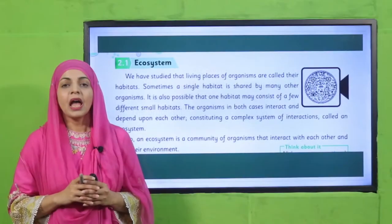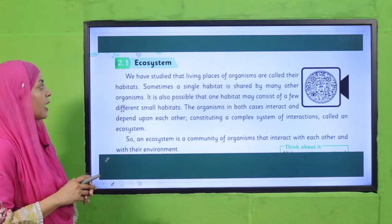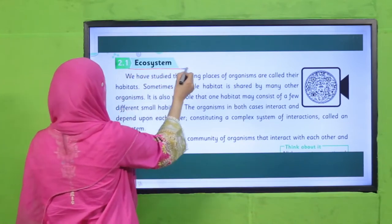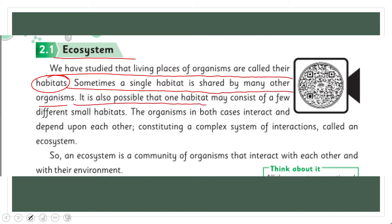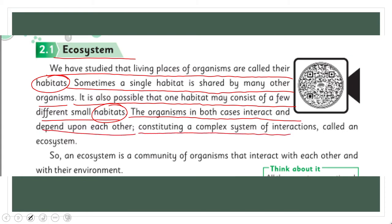Now open chapter 2 in your books. Let's read: 'We have studied that living places of organisms are called their habitats. Sometimes a single habitat is shared by many organisms. It is also possible that one habitat may consist of a few different small habitats. The organisms in both cases interact and depend upon each other, constituting a complex system of interactions called an ecosystem.' An ecosystem is a community of organisms that interact with each other and with their environment.